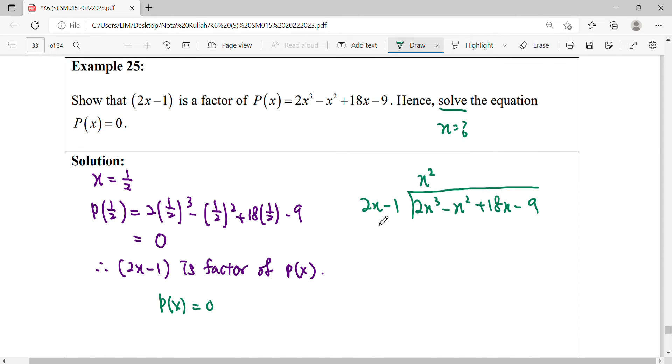Multiply it and you can notice that here gives you 0, here gives you 0. We still have 18x minus 9.